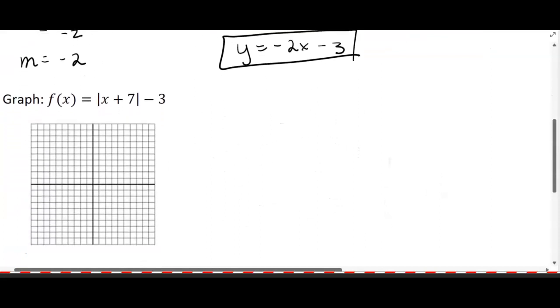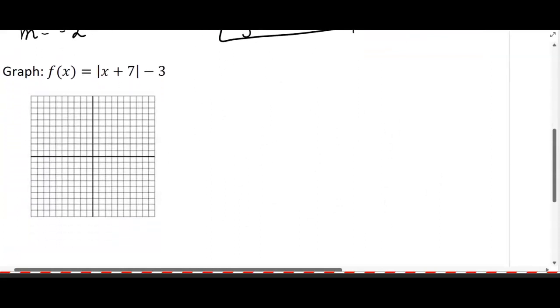The next one, this is an absolute value function. Absolute value makes a V. If you want to think of your original absolute value, it's going something like this. It's a V shape. What we're going to do is shift it 7 to the left and 3 down.